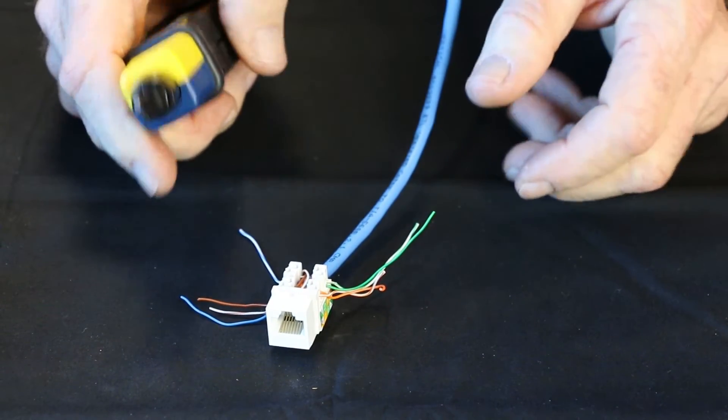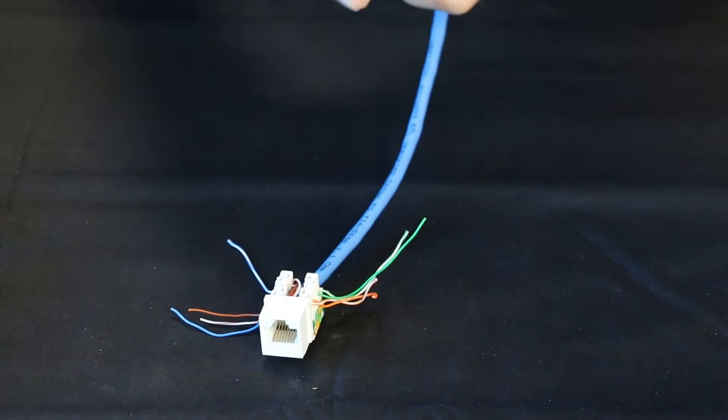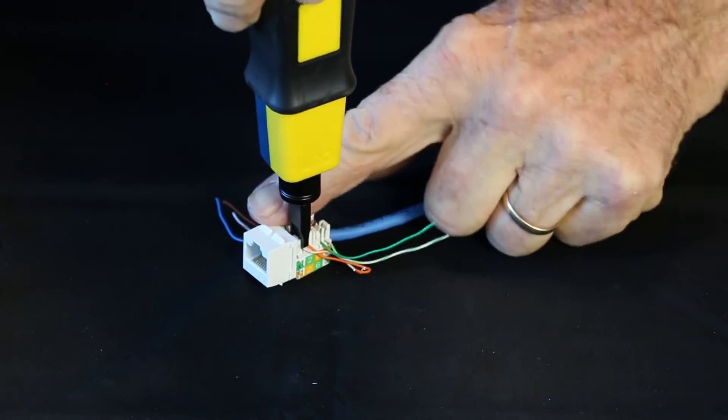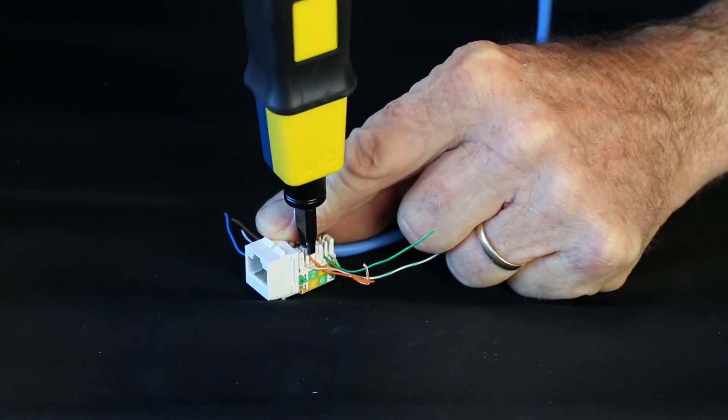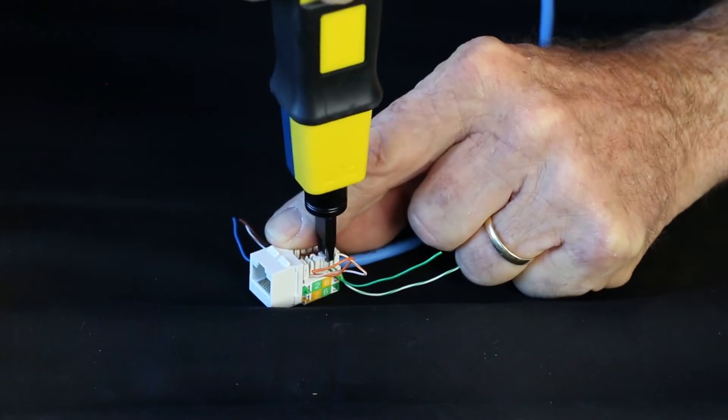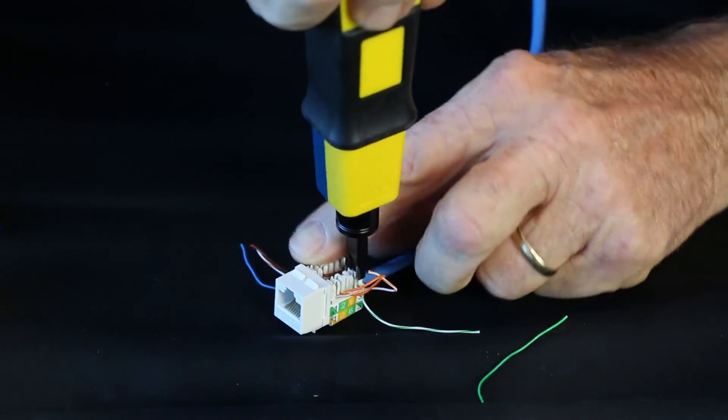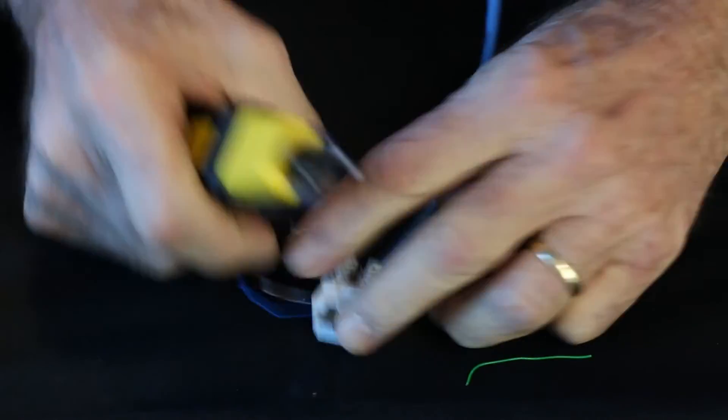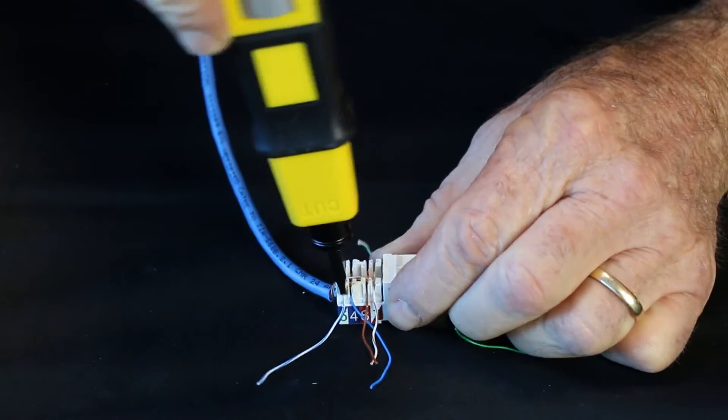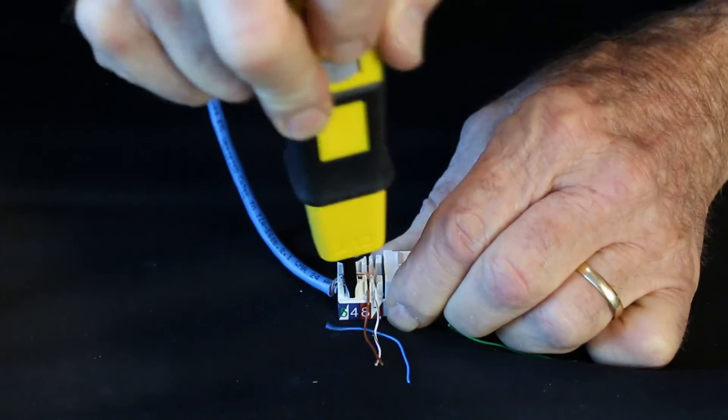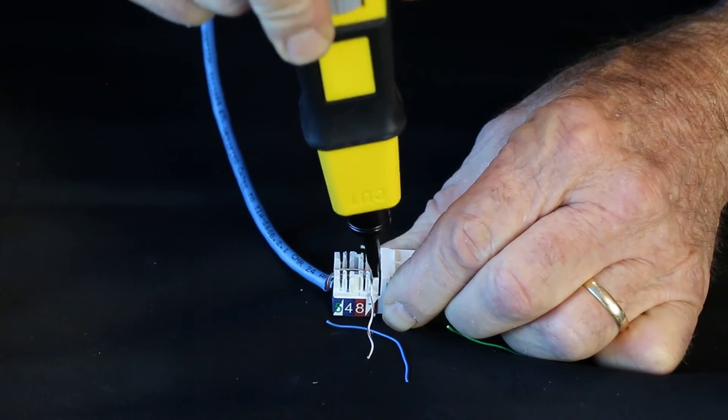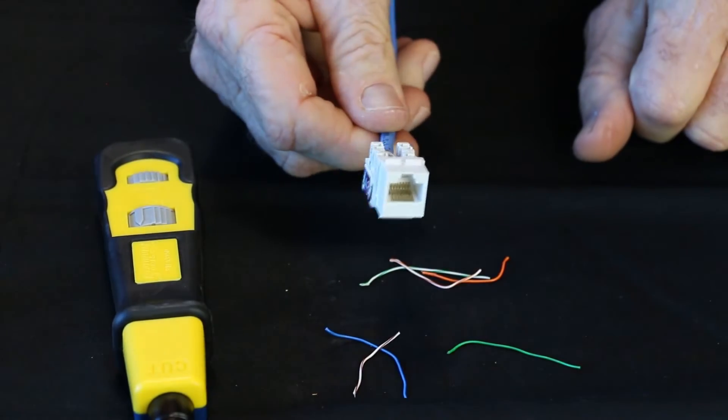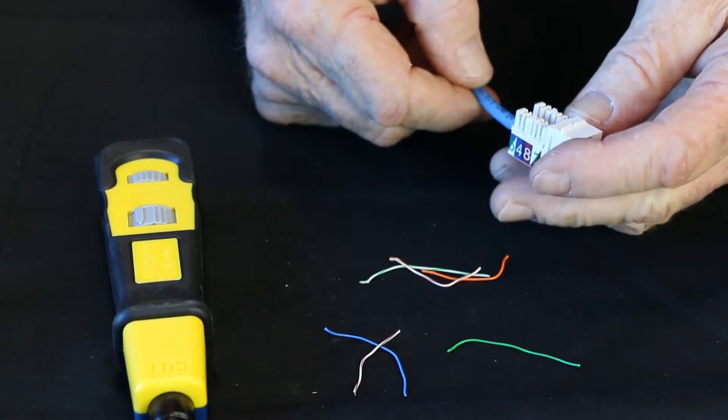So now we're going to punch it down. And you have your low and your high on your tool. Normally low is for data, which is what we're doing. And there you go, punch down. It's ready to go into the wall plate.